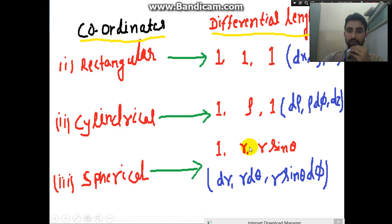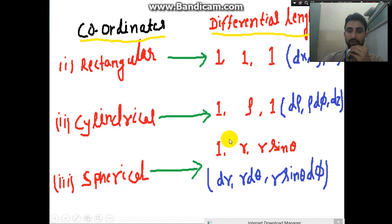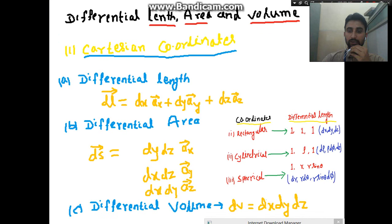The easiest way to recall is: (1, 1, 1) for rectangular, (1, rho, 1) for cylindrical, and (1, r, r·sin(θ)) for spherical. Remember these three sets of multiplication factors — that's the only way to understand differential length. With these three sets, you can easily find the differential length, differential area, and differential volume for any coordinate system.